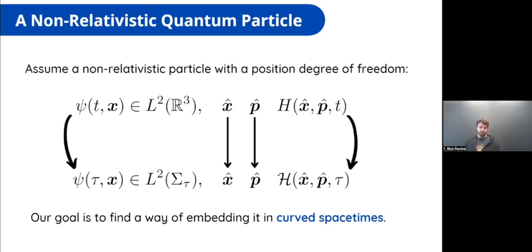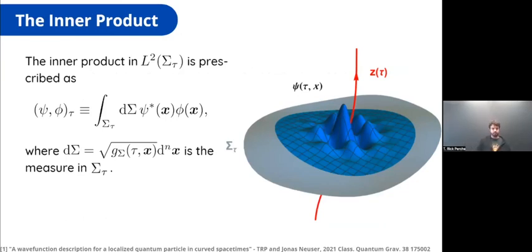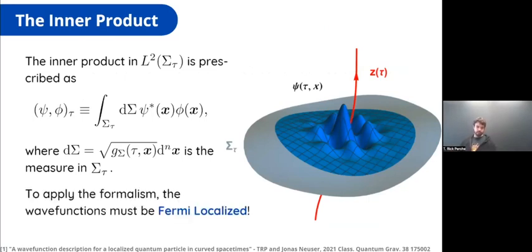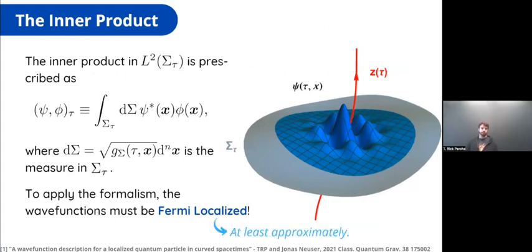We also need to find the changes in dynamics when we perform this transition to curved spacetime. The very first step is to define an inner product — the integral with respect to the measure of the rest surfaces, essentially the induced measure dΣ_τ. By looking at this inner product, we can already see a restriction we must impose: the wave functions must be Fermi-localized, that is, localized within the Fermi-bound radius. We can relax this to approximately Fermi-localized, but there are consequences discussed in the paper. For now, we assume the particle is Fermi-localized.